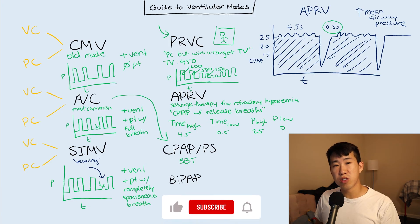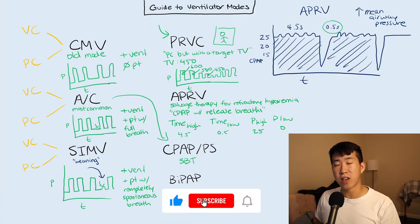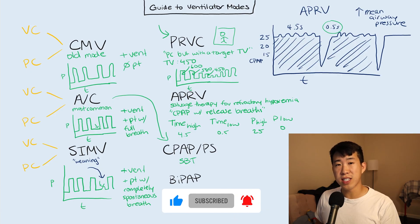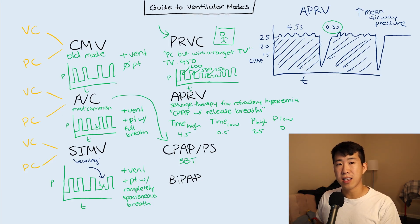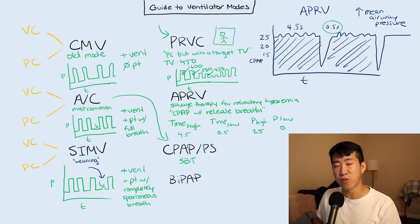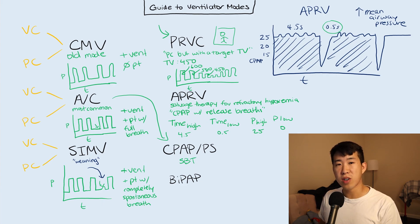I hope this was a really useful basic overview of the different ventilator modes available. Honestly, for residency, you're probably only going to be using assist control and CPAP pressure support. But I always found it interesting when attendings would talk about these different modes and nobody really explained them — so I thought it'd be good to have a basic overview so you understand what they're talking about. Let me know if you have any questions down in the comments below. Thanks for watching, and I'll see you in the next one.